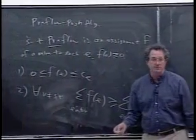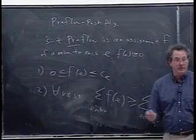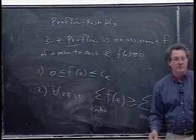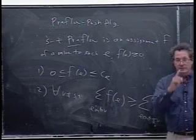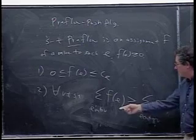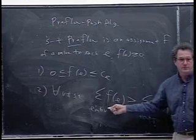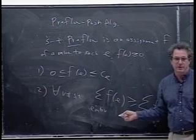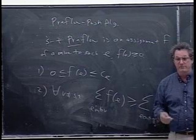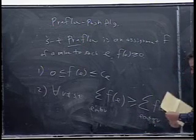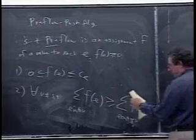And what this algorithm is going to do is always maintain a pre-flow. Instead of maintaining a flow, it's going to be manipulating and changing these assignments so that there's always a pre-flow in hand, but not necessarily a flow. And then at the moment when the algorithm has a flow, we know it's a flow when this is equality. When this inequality becomes an equality, then you have a flow. At that moment, it will turn out that the flow that the algorithm has is actually a maximum flow.